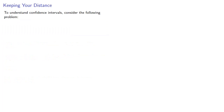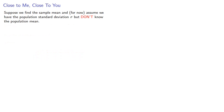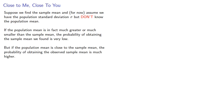To understand confidence intervals, consider this: suppose you are 6 feet away from somebody — how far are they from you? The answer is 6 feet. Similarly, suppose we find the sample mean and, for now, assume we have the population standard deviation but don't know the population mean. If the population mean is much greater or smaller than the sample mean, the probability of obtaining our sample mean is very low. But if the population mean is close to the sample mean, the probability is much greater.